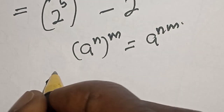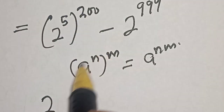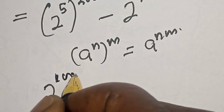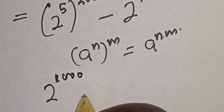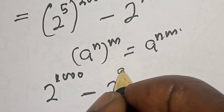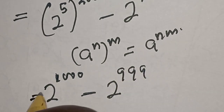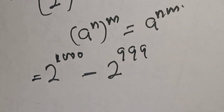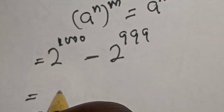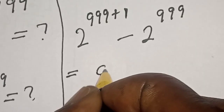Then this becomes 2 raised to power 5 times 200. 5 times 200 is 1000, minus 2 raised to power 999.